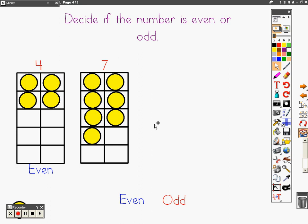What about the number seven? Does each one have a partner? No. So the number is odd.